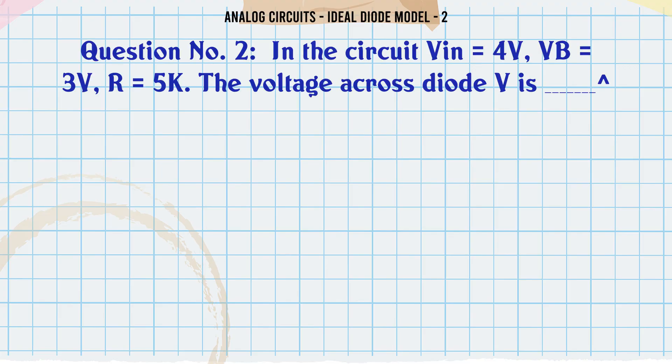In the circuit, Vin = 4V, VB = 3V, R = 5K. The voltage across diode V is: A) 1V, B) 4V, C) 3V, D) 7V. The correct answer is 1V.